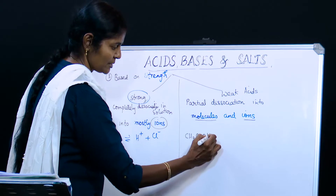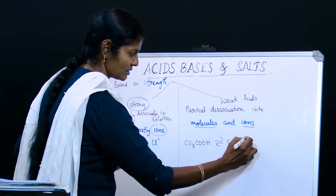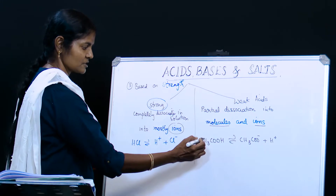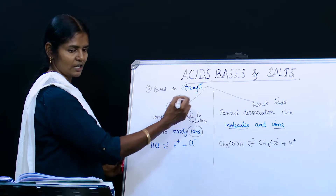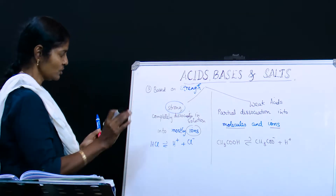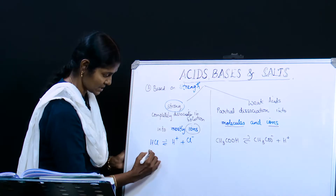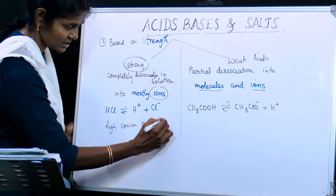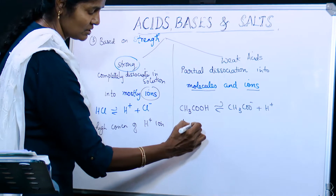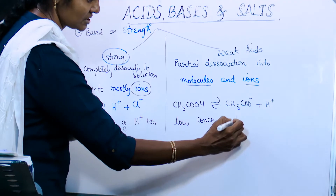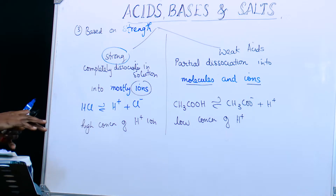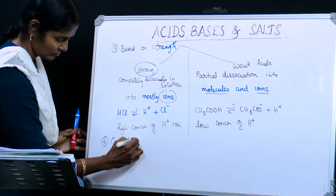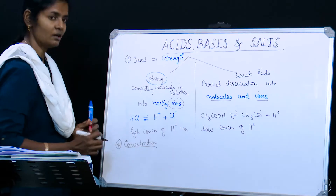An example of a weak acid is acetic acid, which in water is present as acetate ion and hydrogen ion along with acetic acid molecules. So strong acids completely dissociate into ions, giving a high concentration of hydrogen ions, whereas weak acids partially dissociate, giving a low concentration of hydrogen ions. Those are the differences based on strength.